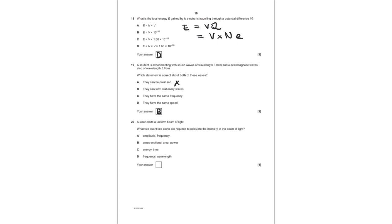Question number 20, and this is the final question of this video. A laser emits a uniform beam of light. Which two quantities alone are required to calculate the intensity of the beam of light? We know that intensity is equal to power over area, and that leaves us with B being the answer. So as I said, this is as far as I go in this video. I will be doing another one coming out next week where I'll go through the long answer questions as well. So stay tuned for that video, and thanks ever so much for watching.